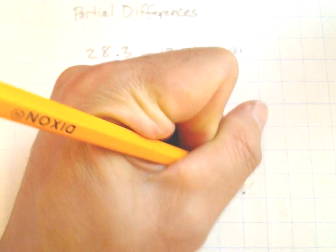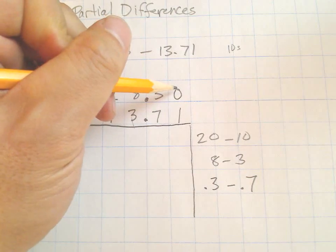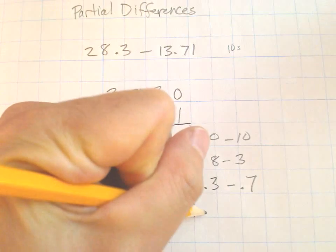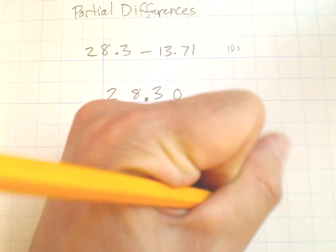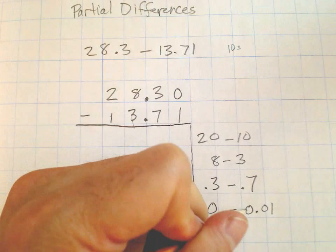This is the ones place: 8 minus 3. Here we've got the tenths place: 3 tenths minus 7 tenths. Make sure to place that decimal point in when you're doing that one.